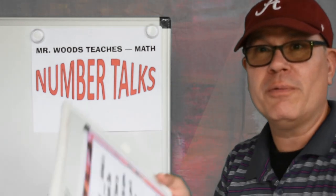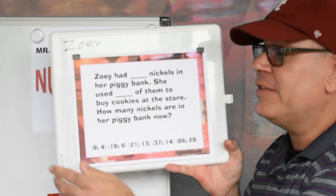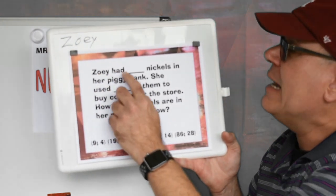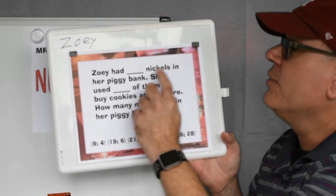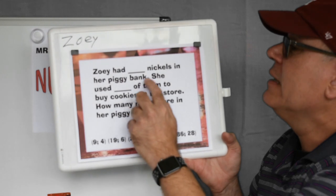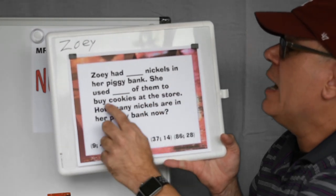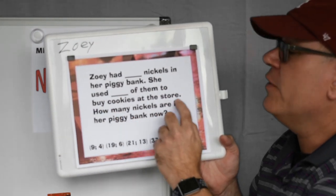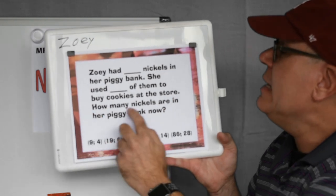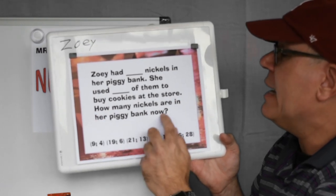Today, we're going to work with Zoe. So let's see what Zoe has to say. Zoe had blank nickels in her piggy bank. She used blank of them to buy cookies at the store. How many nickels are in her piggy bank now?